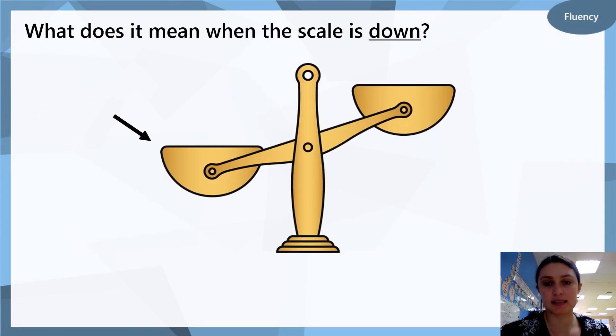So this is called a balancing scale and this helps us see which thing is heavier and which thing is lighter. You can see that the arrow is pointing to one side of the scale and that side is a little bit further down than the other.